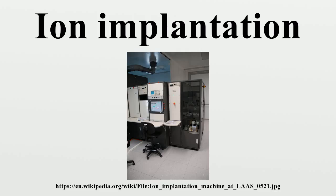Each individual ion produces many point defects in the target crystal on impact, such as vacancies and interstitials. Vacancies are crystal lattice points unoccupied by an atom — the ion collides with the target atom, resulting in transfer of a significant amount of energy such that it leaves its crystal site. This target atom then itself becomes a projectile in the solid and can cause successive collision events. Interstitials result when such atoms come to rest in the solid but find no vacant space in the lattice to reside. These point defects can migrate and cluster with each other, resulting in dislocation loops and other defects.